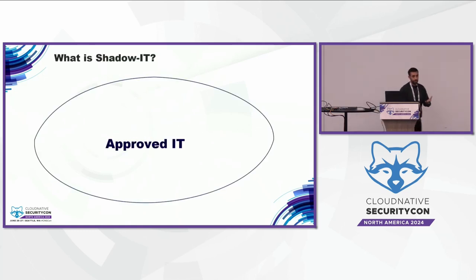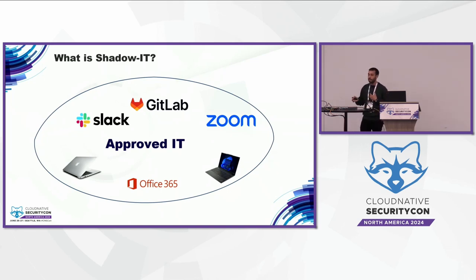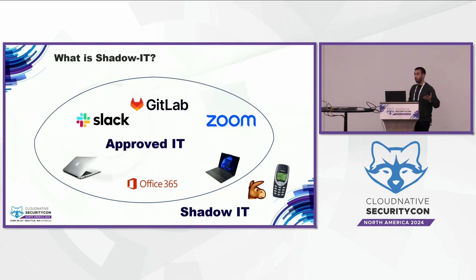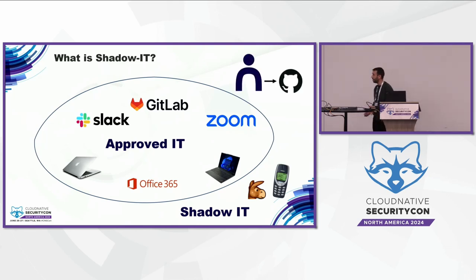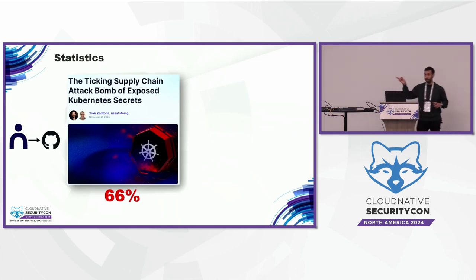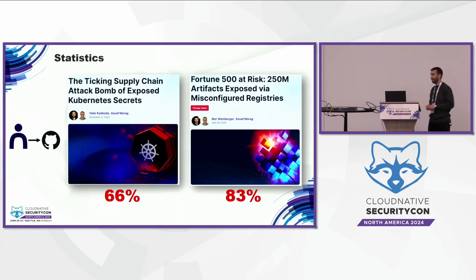Let's move on to Shadow IT. First, we need to understand what approved IT is: any devices or software that your IT department allows you to use in the corporate network because they have policy and oversight. Shadow IT is exactly the opposite — software or devices your IT department does not know you use. In our research, we found that due to COVID and working from home, corporate secrets can find themselves in a personal GitHub repository of an employee. We found that 66% of tokens from the previous Kubernetes research were in personal GitHub repositories, and in another research about exposed Artifactory and registries, more than 80% were in personal repositories.